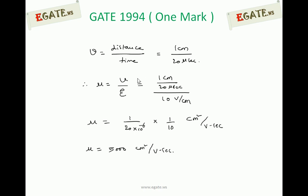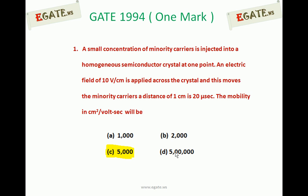So mu equals V divided by epsilon: that is 1 centimeter divided by 20 microseconds, all divided by 10 volt per centimeter. The microseconds must be converted into seconds, giving us 1 divided by (20 × 10⁻⁶) divided by 10, which equals 5000 centimeter square per volt second. So the right option for the given question is C: 5000.